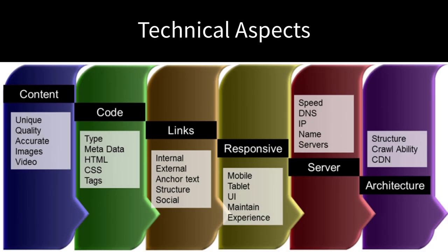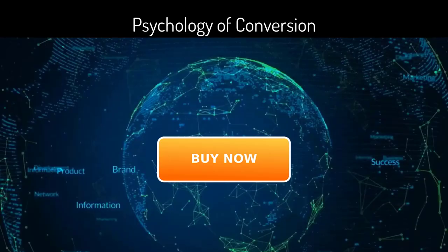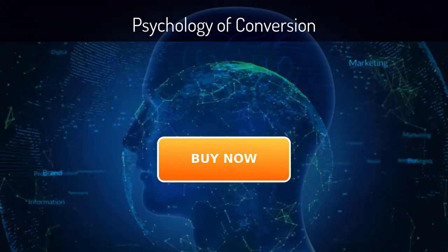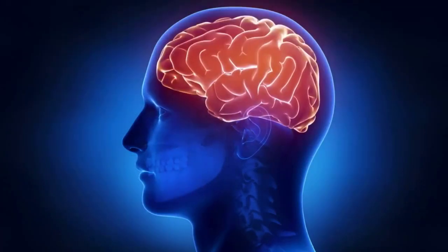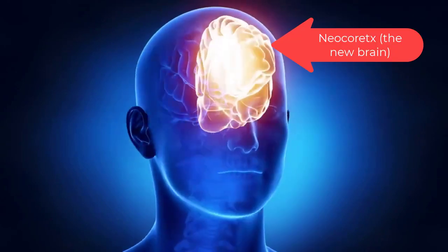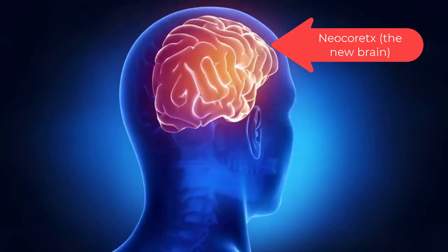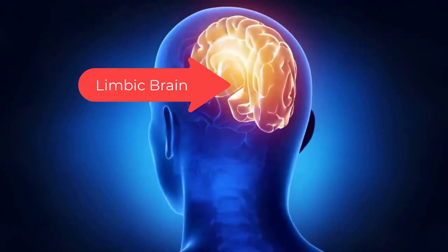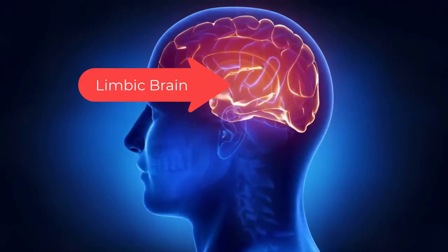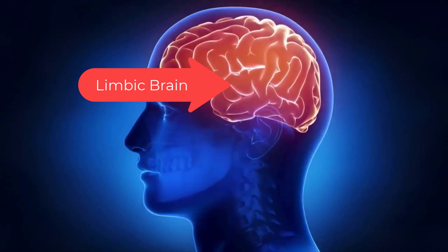Of course, all online marketing must have three elements in alignment: the technical aspects — servers, layout, code structure; the traffic — SEO, social, and paid; and the psychology of conversions. Your brain has three basic layers and only one real decision maker. The new brain, the neocortex, thinks and processes rational data. The middle brain, the limbic brain, feels emotions and handles our fight-or-flight instinct.